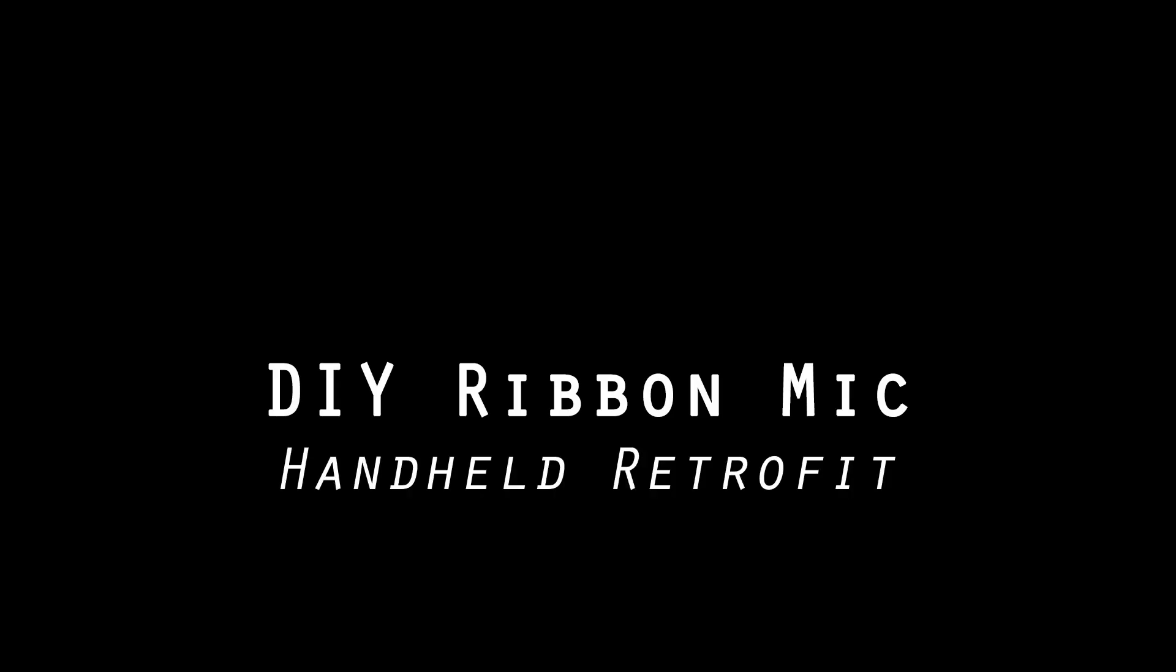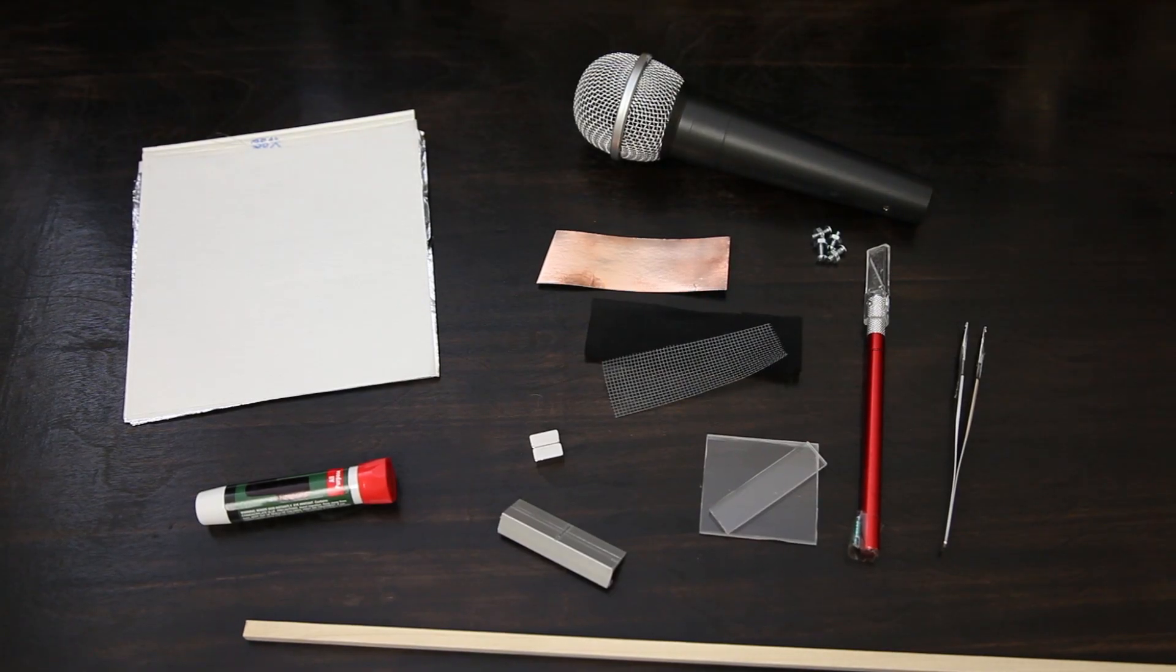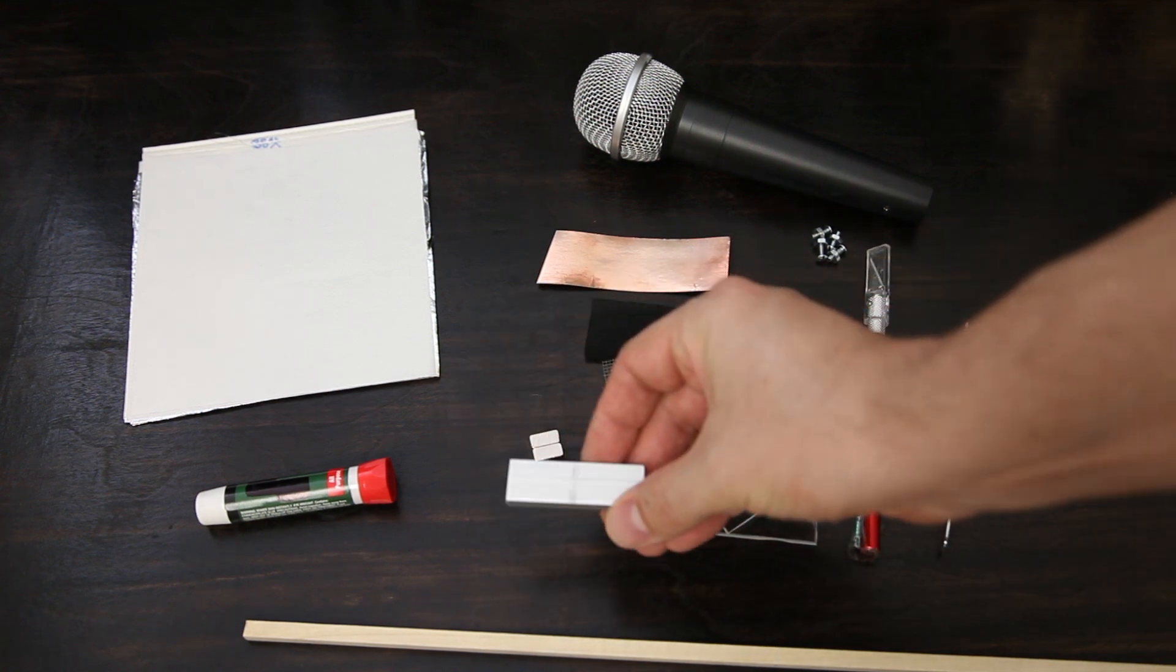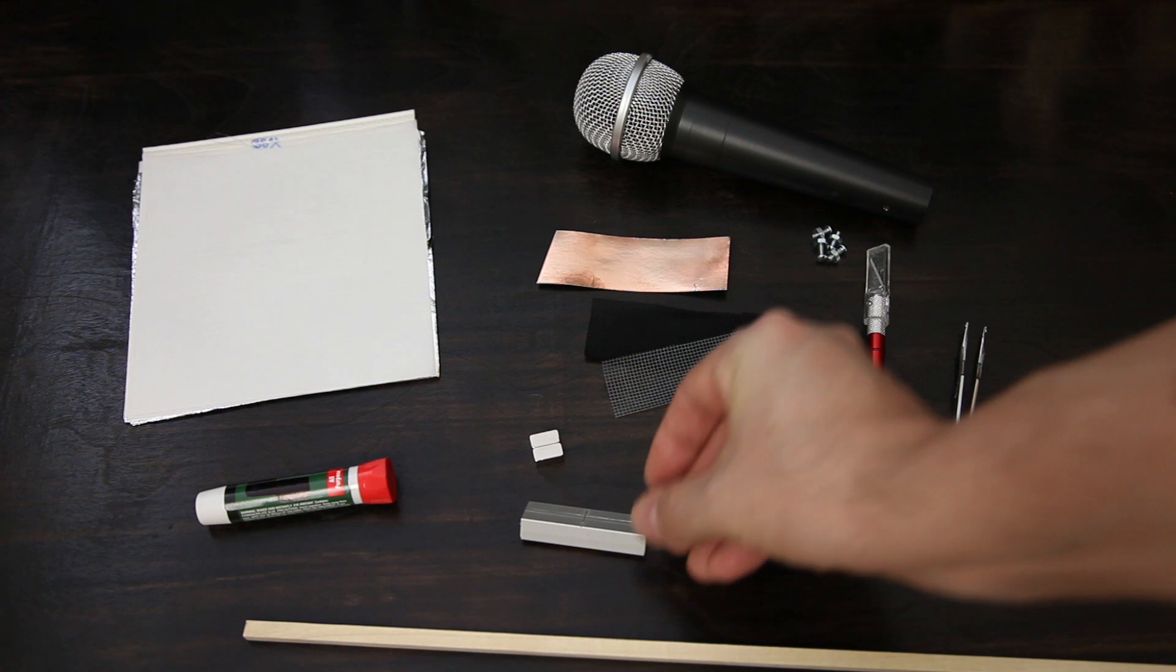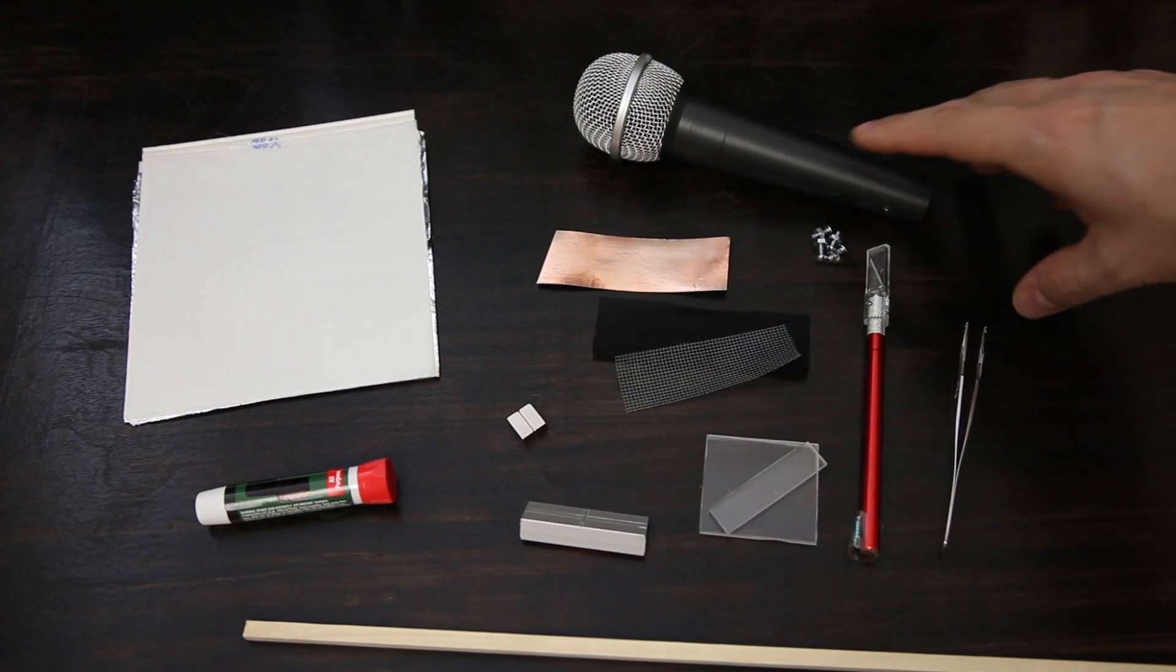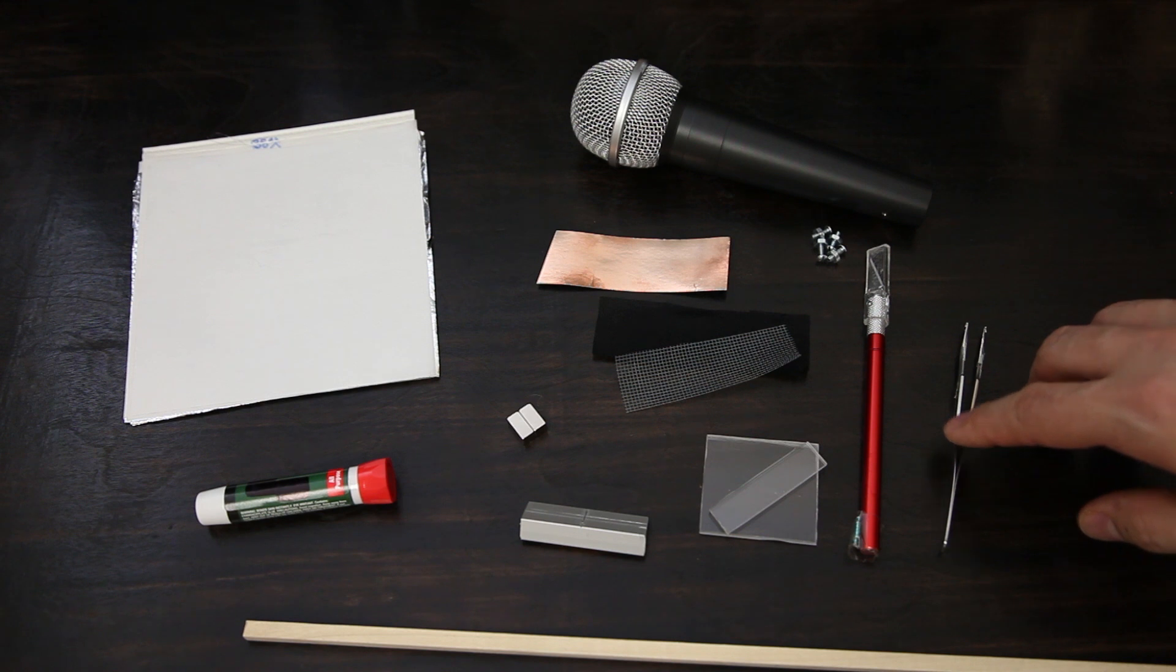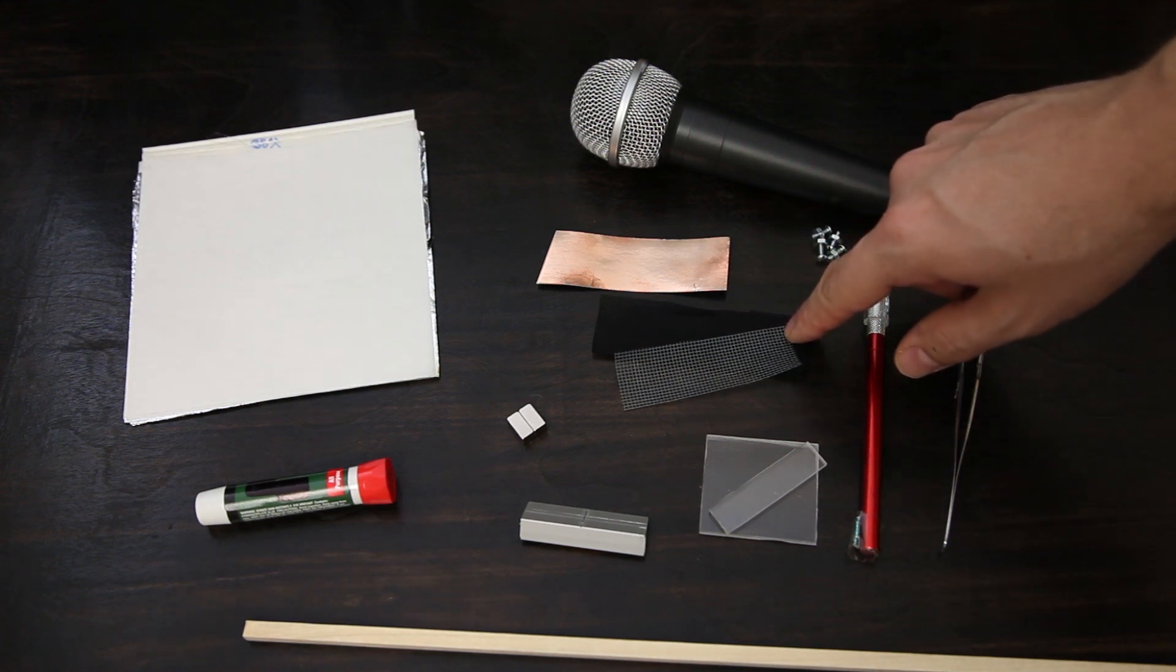Welcome back. Today we're working on a DIY ribbon mic, a handheld retrofit. We're going to use aluminum channel, strong quarter-inch magnets for a small mic element, the mic I've chosen to mod, tweezers which are essential, and a sharp exacto blade.